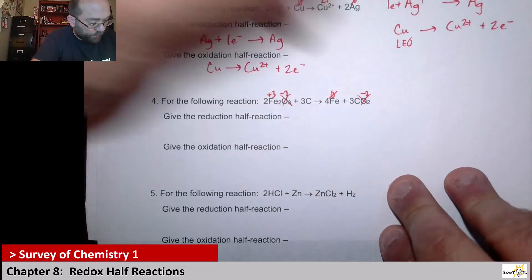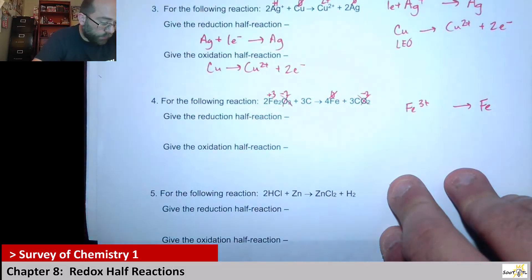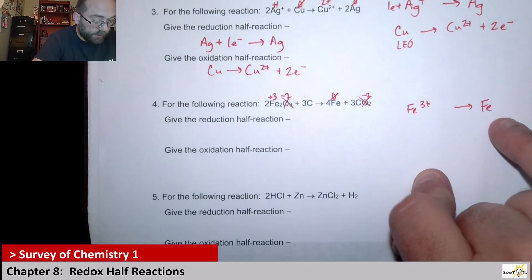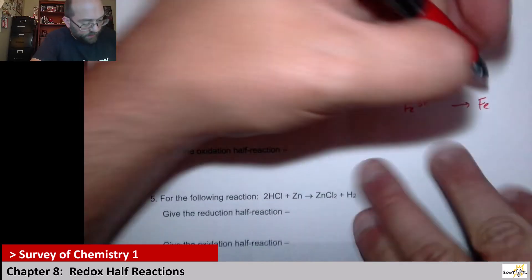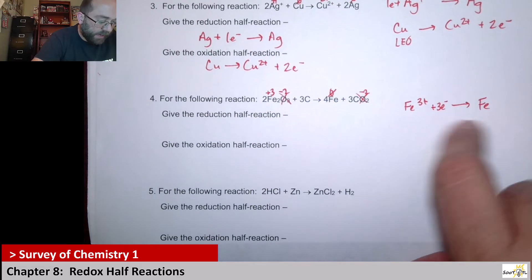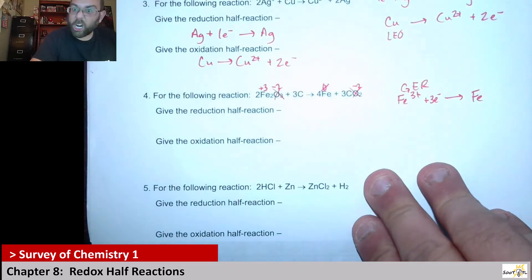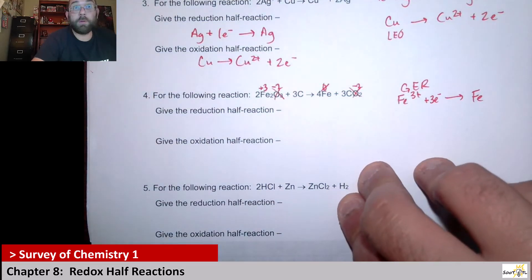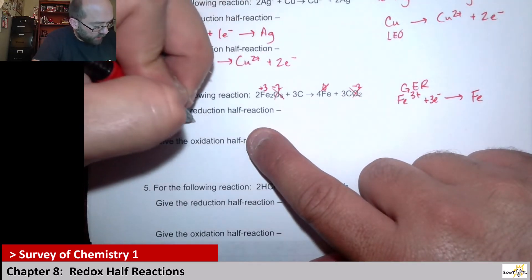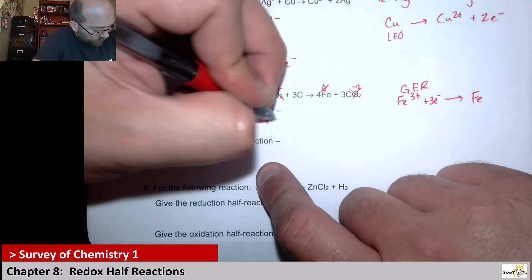Let's write that half reaction. We're looking at Fe³⁺ giving me just Fe neutral. I've got to add electrons based off the charge — it's zero on this side, positive on that side. So I need to add the three electrons there. It looks like it's gaining electrons — positive to zero, it gained electrons. So the reduction half reaction is Fe³⁺ plus three electrons gives me iron.